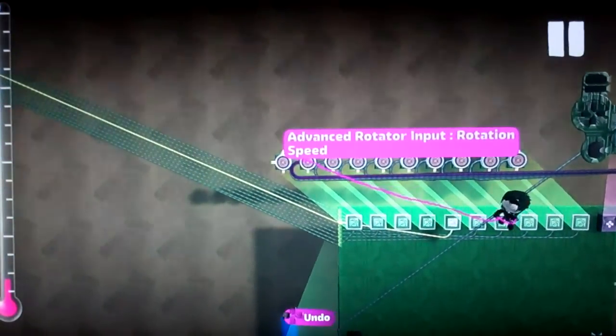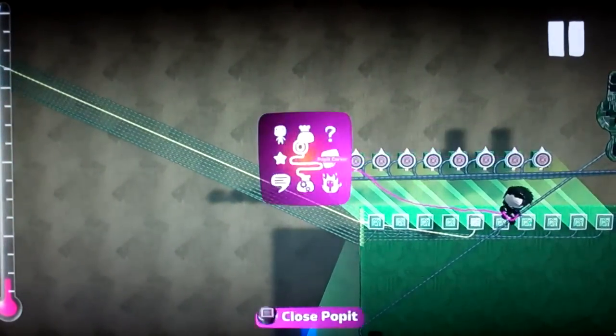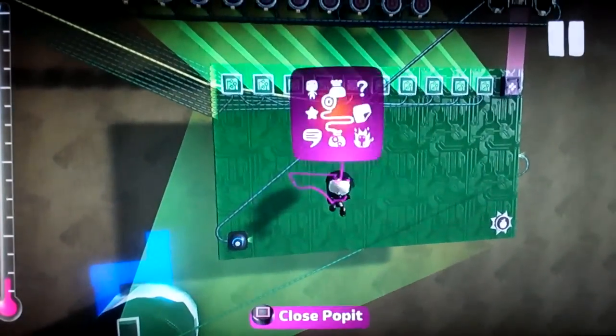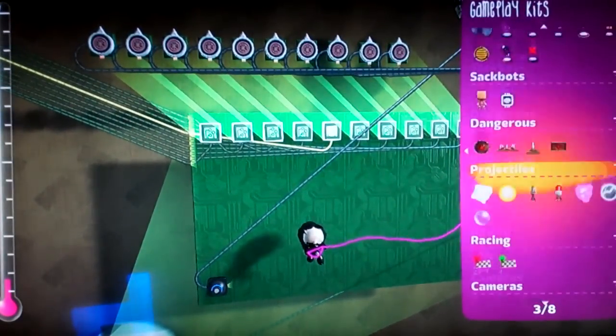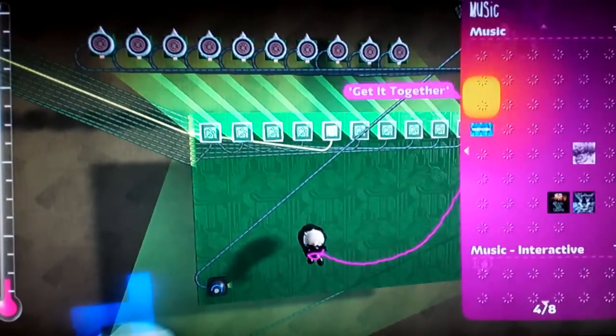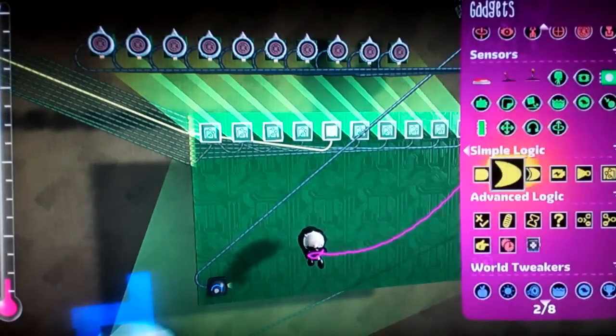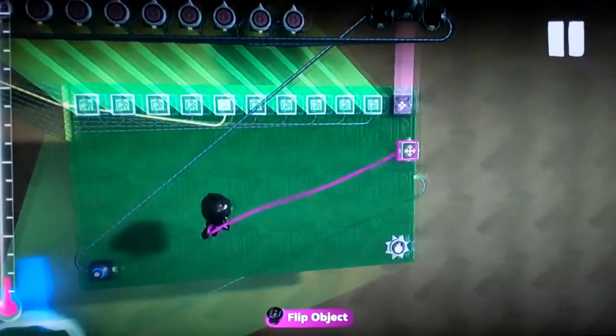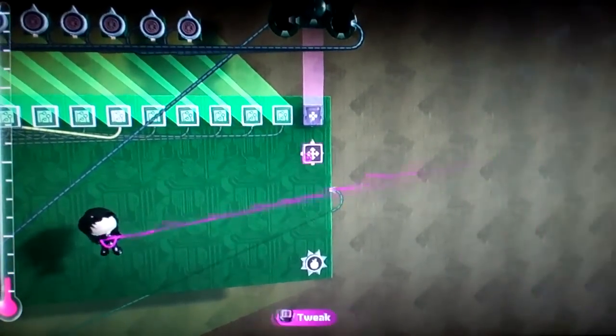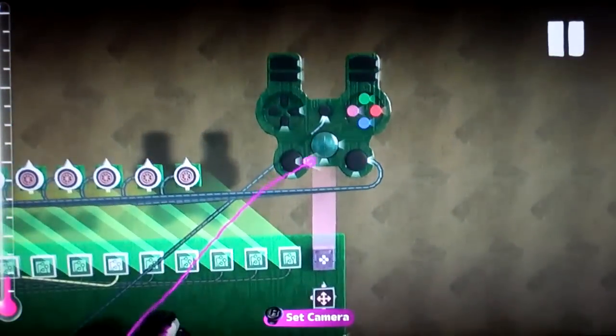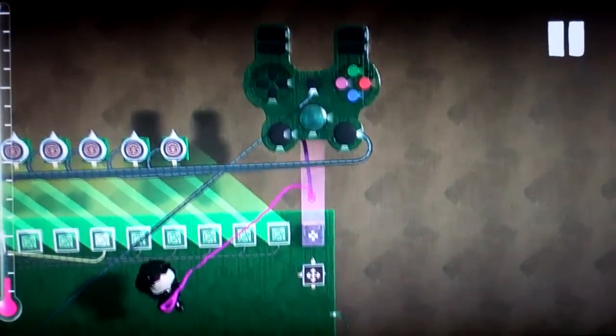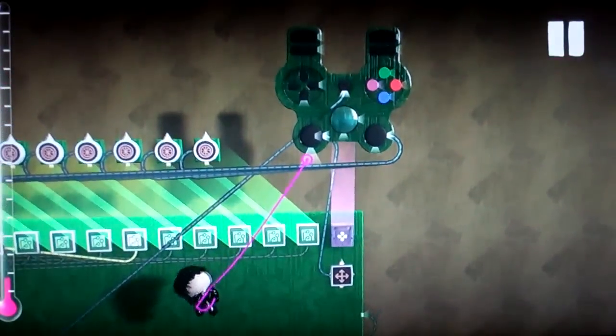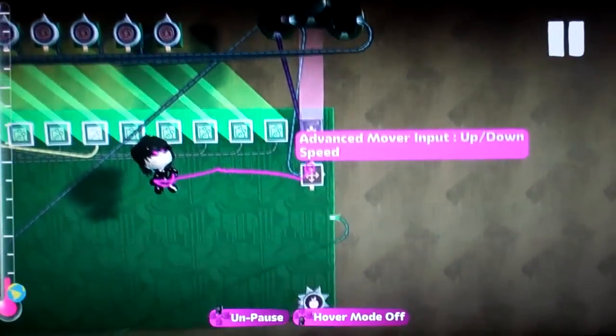After you have the turning ready, you're going to want to make it so that they can move. So you're going to get an advanced mover and place it right here. On the advanced mover, you're going to want to put the controlinator left and right on left-right speed and up-down speed, so that it moves around.